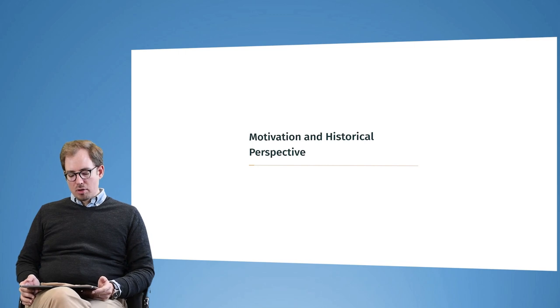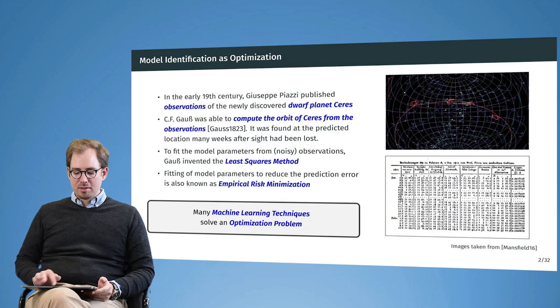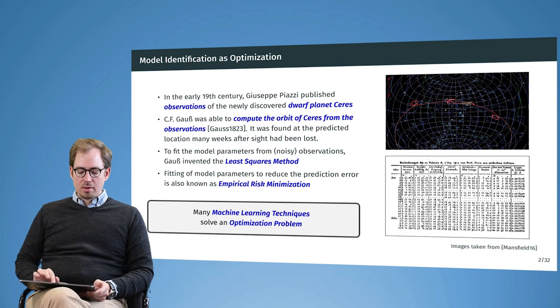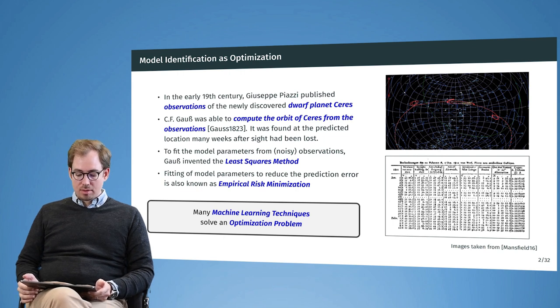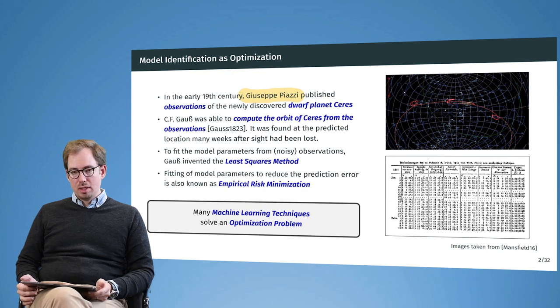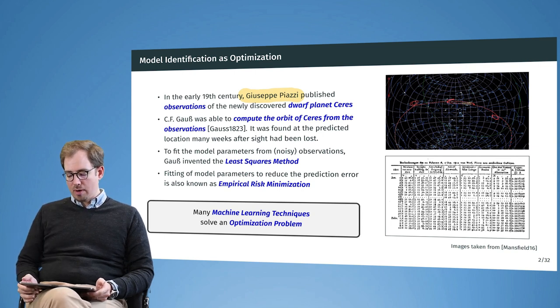Jumping into the first chapter on motivation and historical perspective, what you see here is one of the first examples where actual optimization was used in the mathematical sense. This topic goes back to the early 19th century, around beginning 1800, where Giuseppe Piazzi published observations of a newly discovered dwarf planet called Ceres.